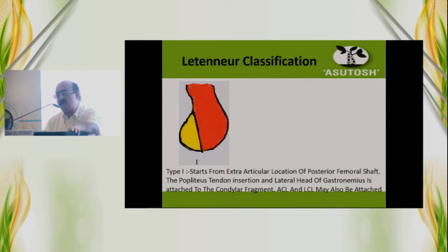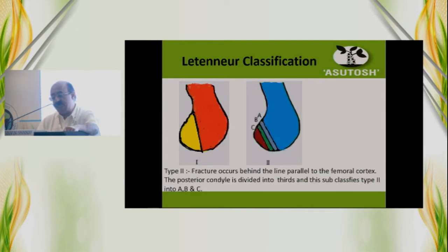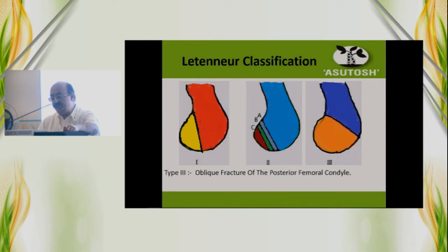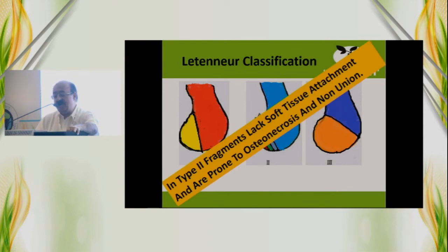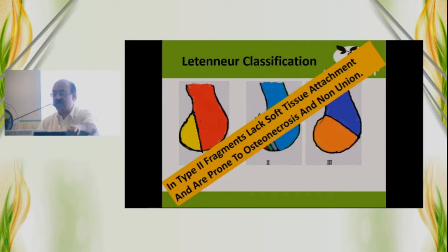The popular classification is that of Litterner. It is Type 1 if it is going parallel to the posterior cortex, Type 2 divided into A, B, C if it is posterior to the posterior cortex of the femur, and Type 3 if it is an oblique fracture of the femoral condyle. It is the Type 2 that lacks soft tissue and is more prone to osteonecrosis and nonunion.